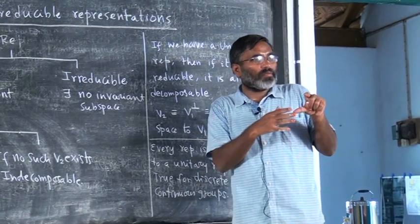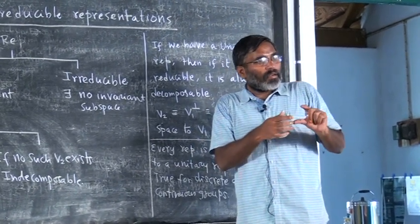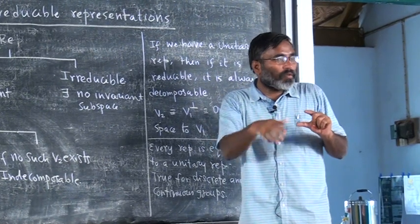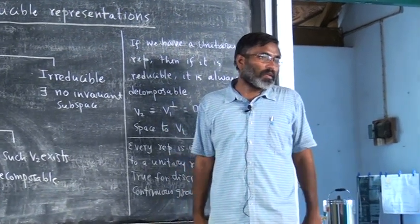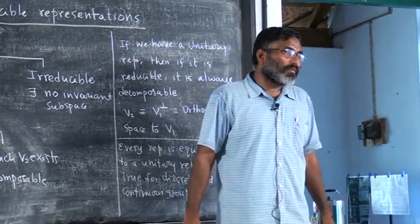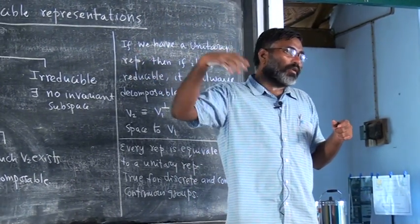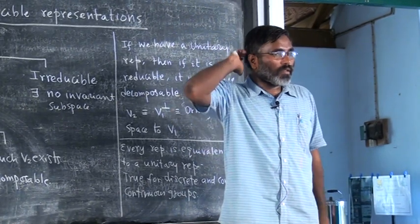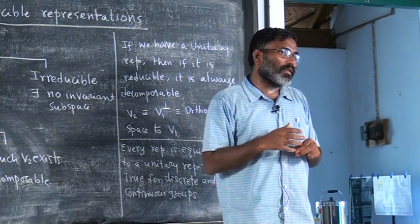Within V2, if you have a subspace which is invariant, then perpendicular to that subspace in V2 you will have another subspace. So you can go on decomposing. By definition, V2 is all perpendicular to V1, and within that V2 is perpendicular to this, so it will be perpendicular to that automatically.